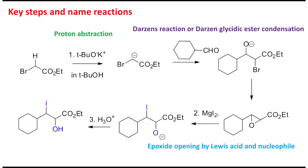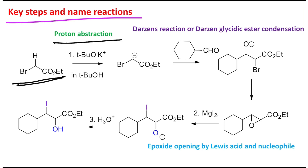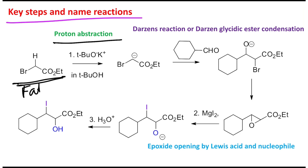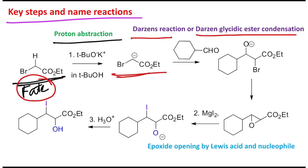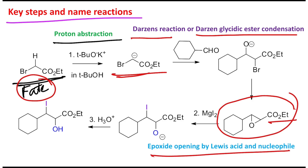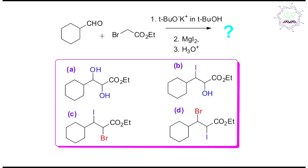The key steps and name reactions associated are: first, proton abstraction — an acid-base reaction — from the alpha-bromo acetate ester (which is more acidic than the aldehyde alpha proton); second, Darzen's reaction or Darzen's glycidic ester condensation to produce the alpha-beta epoxy ester derivative; and third, epoxide opening by a Lewis acid and nucleophile — in this case, iodide from MgI₂ — to give the final product after workup.